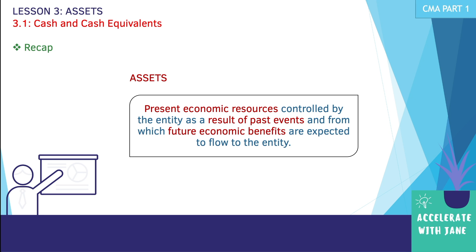For the recap on assets, this is the definition from the standard: assets are present economic resources controlled by the entity as a result of past events and from which future economic benefits are expected to flow to the entity. The key points highlighted here are: there should be present economic resources, assets must result from past events, and there should be future economic benefits.